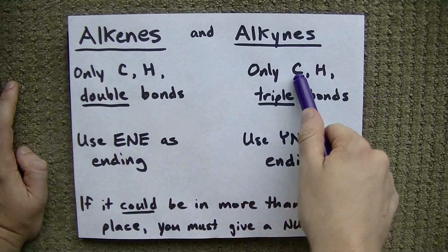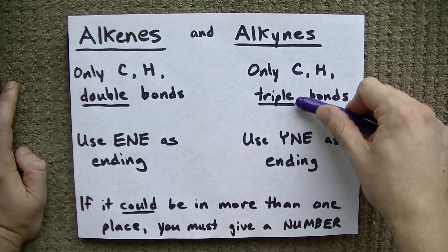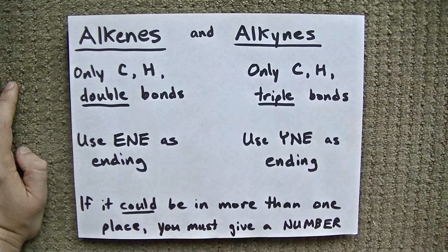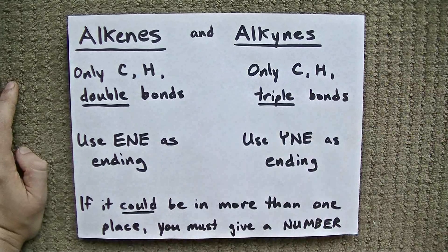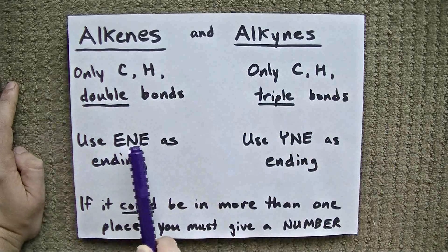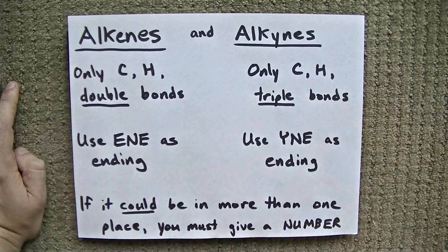Alkynes are the same, carbon and hydrogen, all single bonded together, but you have triple bonds among them. Now, the way that these differ from alkanes, all single bonds, is that we have to use the ending E-N-E for alkenes and Y-N-E for alkynes. I'll show you how that works soon.